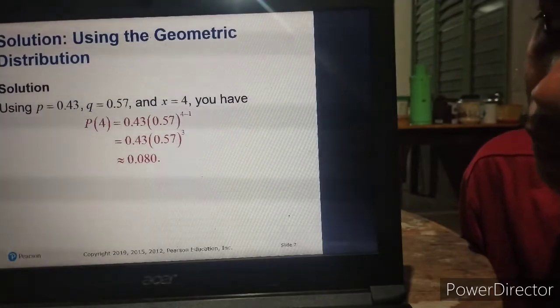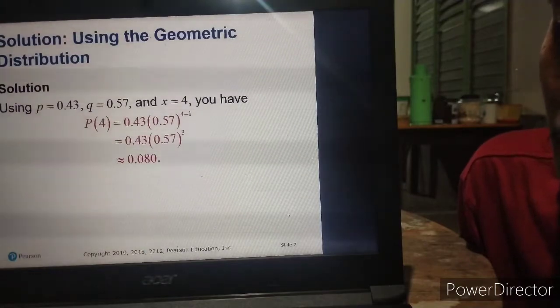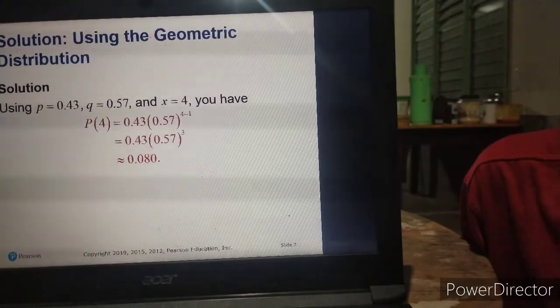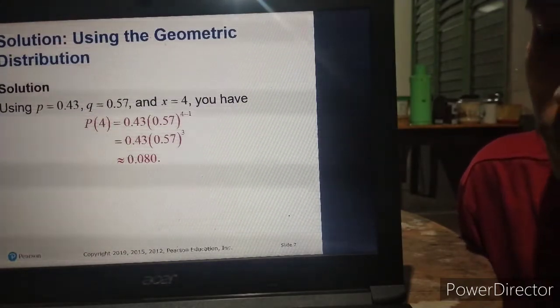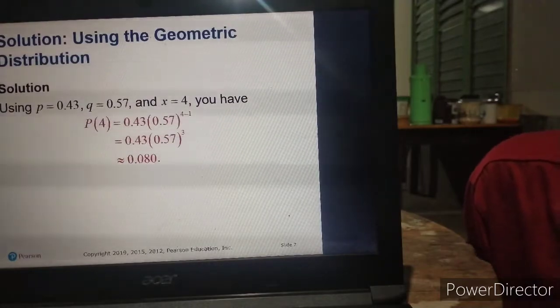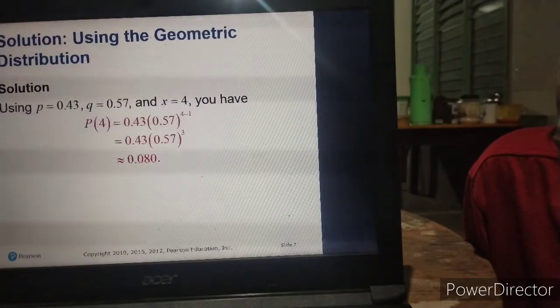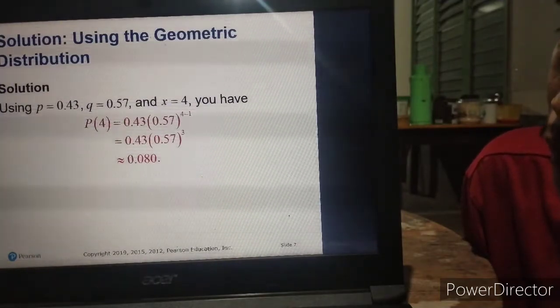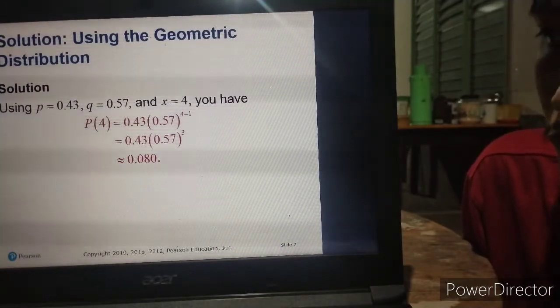Let's identify the given. P, or probability of success, is equals to 0.43. Q, or the probability of failure, is 0.57, obtained from subtracting the probability of success from 1. And X is equals to 4. We have probability of fourth is equals to 0.43 multiplied by 0.57 raised to 4 minus 1.